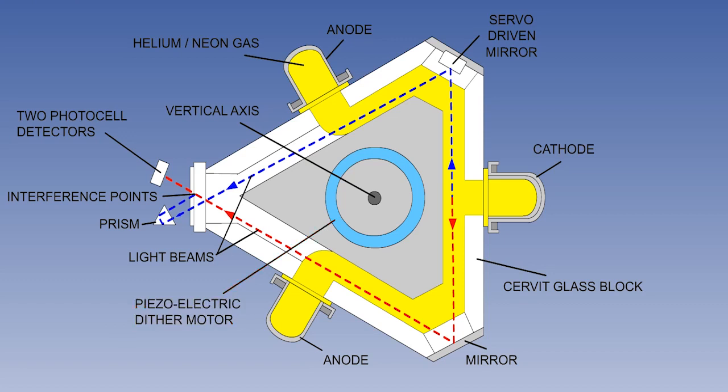Let's sum up this second lesson on inertial reference systems. We said that the biggest single change which makes an IRS different from an INS is the use of ring laser gyros.